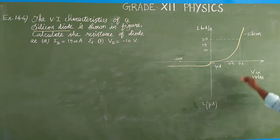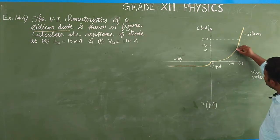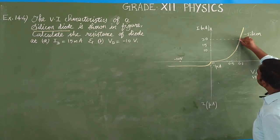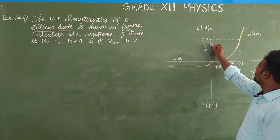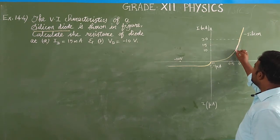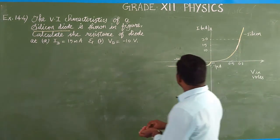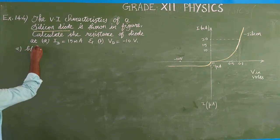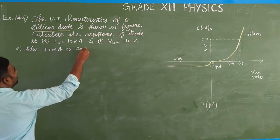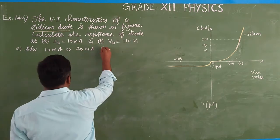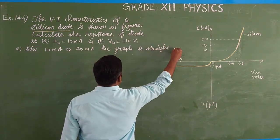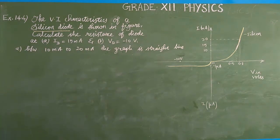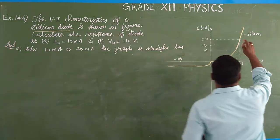What is the name of the voltage? It is the threshold voltage. From 0.7 V onward, you can notice that in this graph, 0.7 to 0.8 is linear — almost linear. So the diode current is 15 milliampere. The 15 milliampere is between 10 milliampere and 20 milliampere, and between 10 and 20 milliampere the graph is a straight line. So in this case, we can determine the resistance in forward bias.